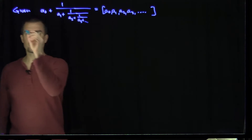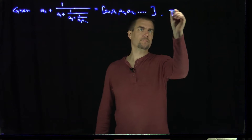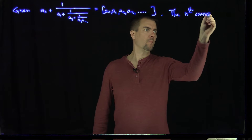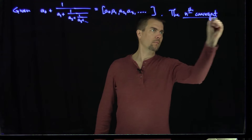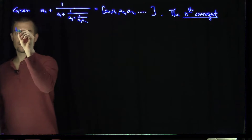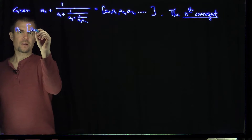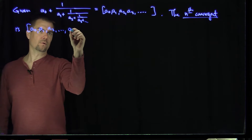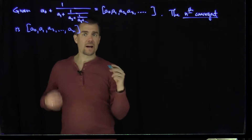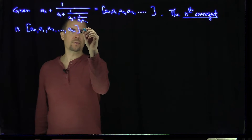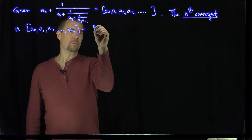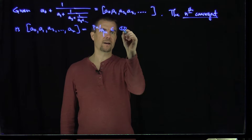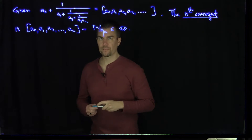The n-th convergent is [a0, a1, a2, ..., an]. This n-th convergent is a rational number, so I'd like to write this as pn over qn. We know that any finite continued fraction is a rational number.